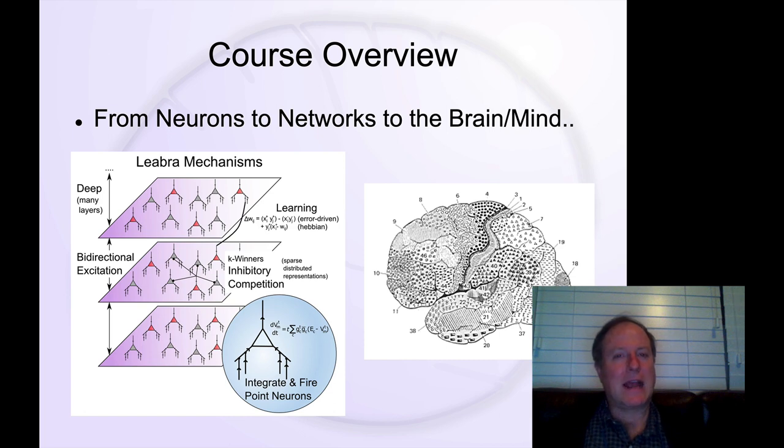There we have this concept of detection. Neurons are detecting things in the environment. They're looking for patterns. Then we move up a level and think about how do those neurons work together when they communicate in networks. This is the level of interactions between neurons in larger sheets.